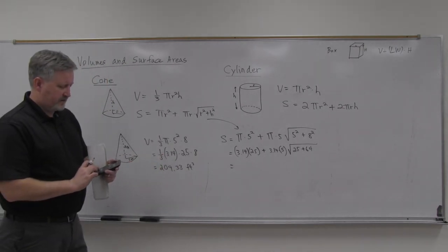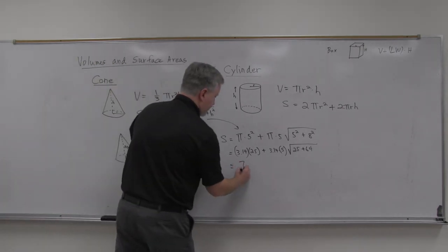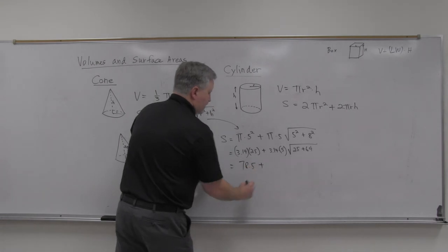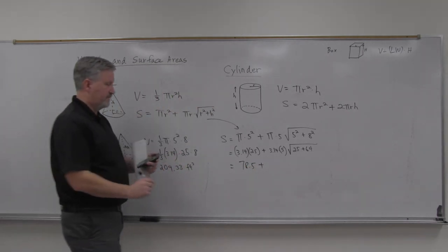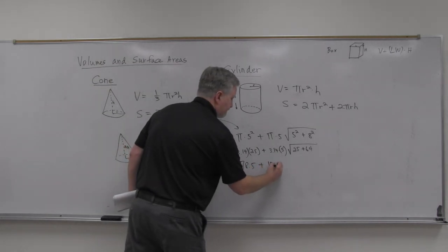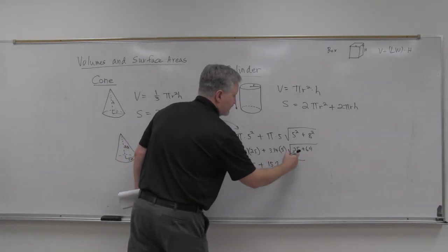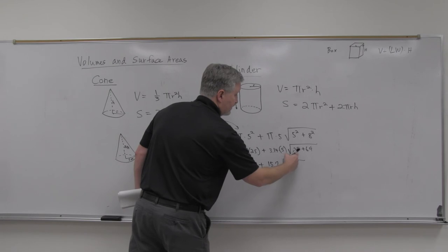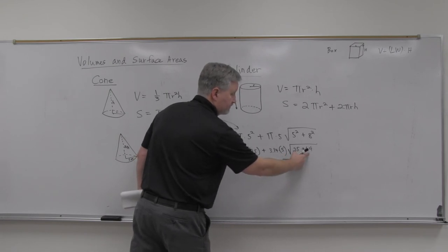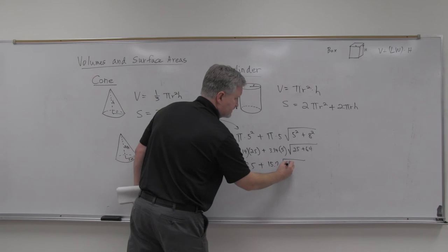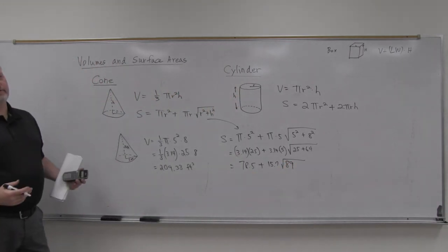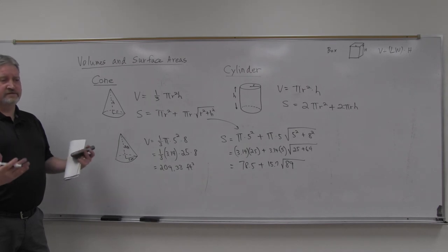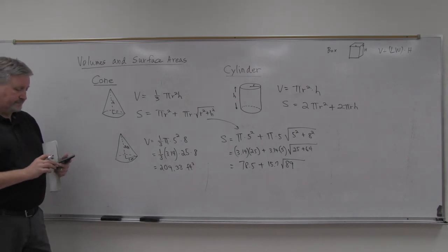The thing I would say about this is, let's do it. So 3.14 times 25 gives me 78.5. 3.14 times 5 gives me 15.7. And on these, you've got to add these before you square root them. So add those first, that would be 89. The square root of 89. You can't square root those and then add them. You've got to add them and then square root them.